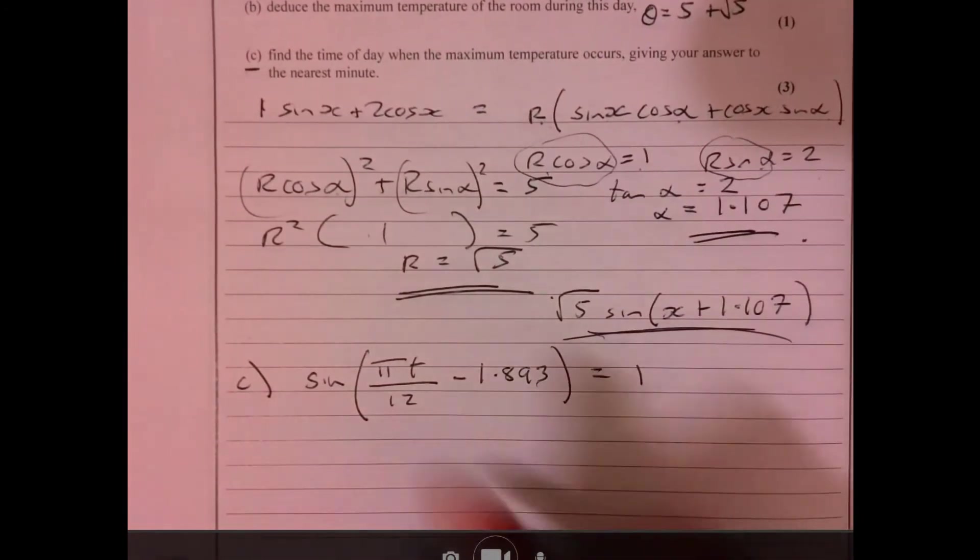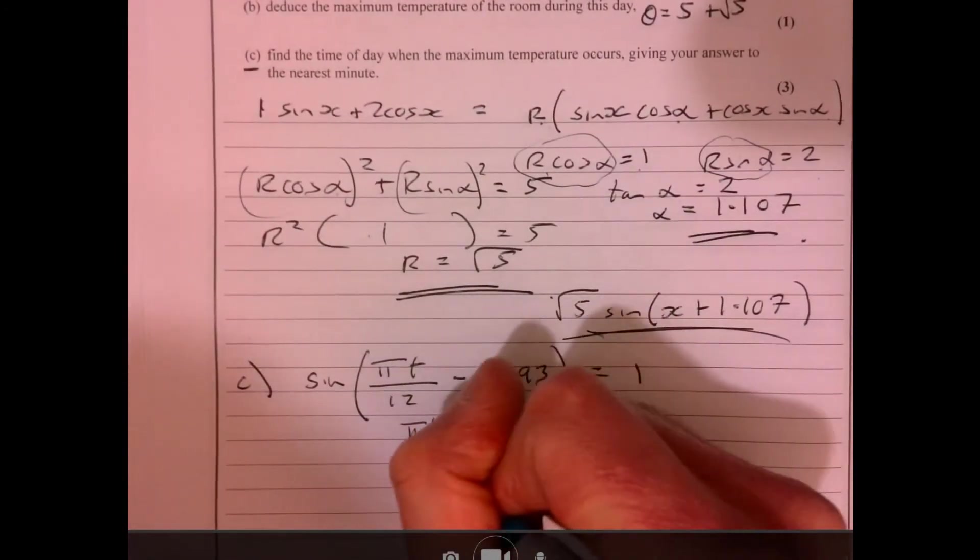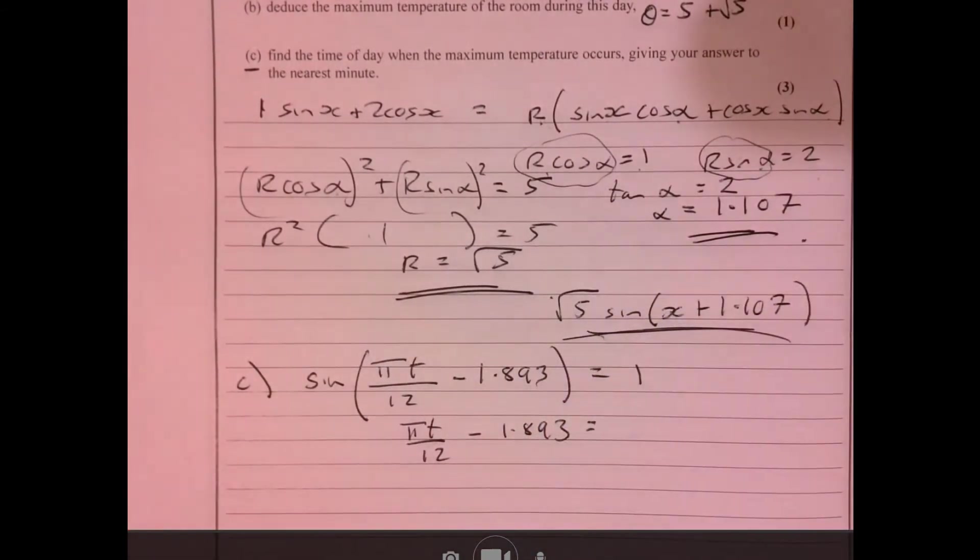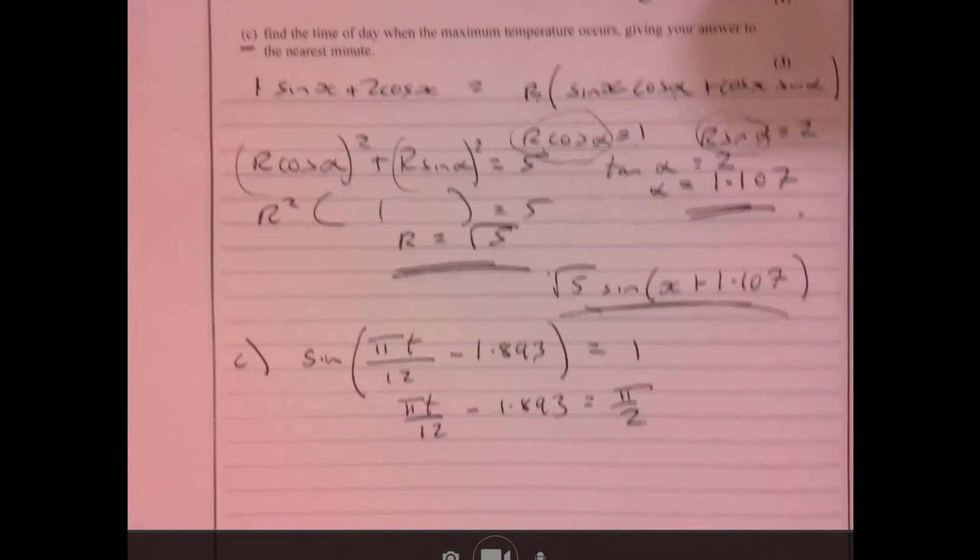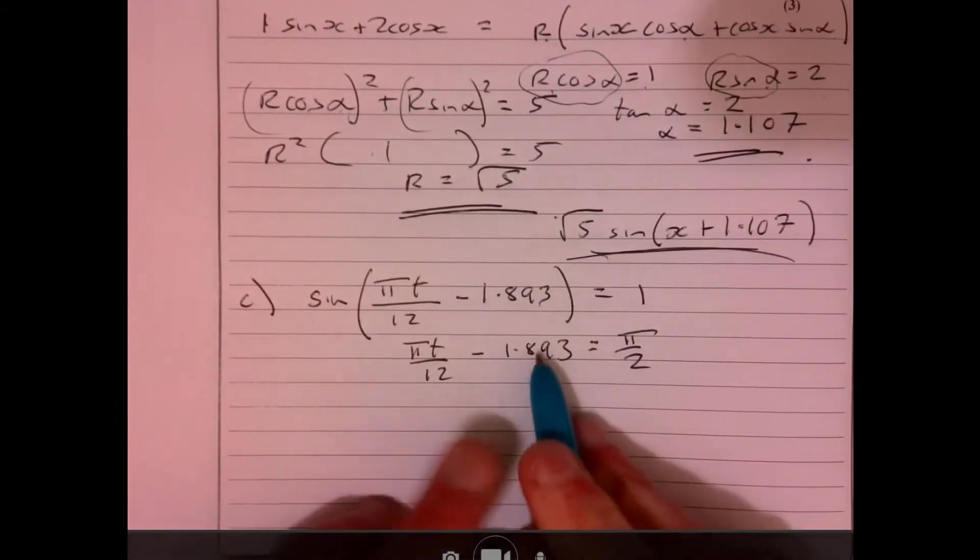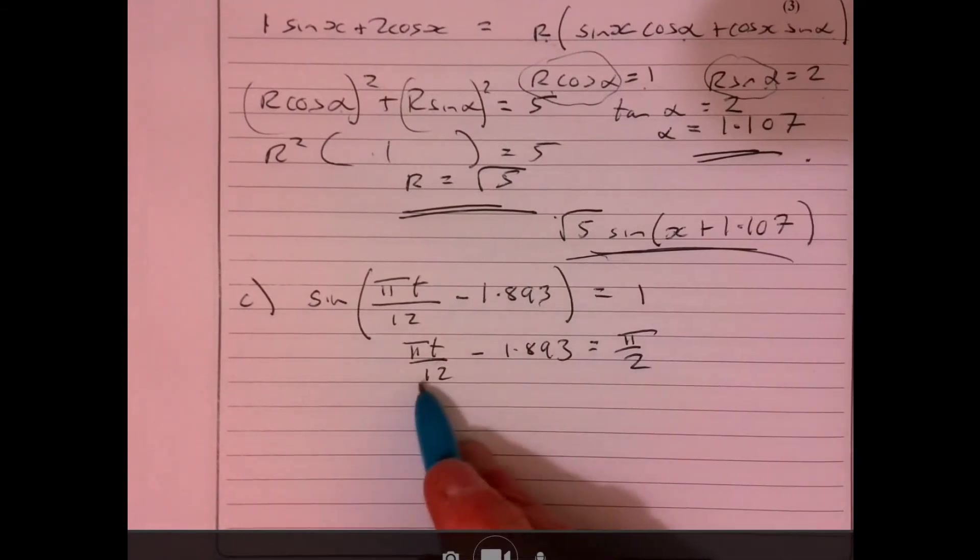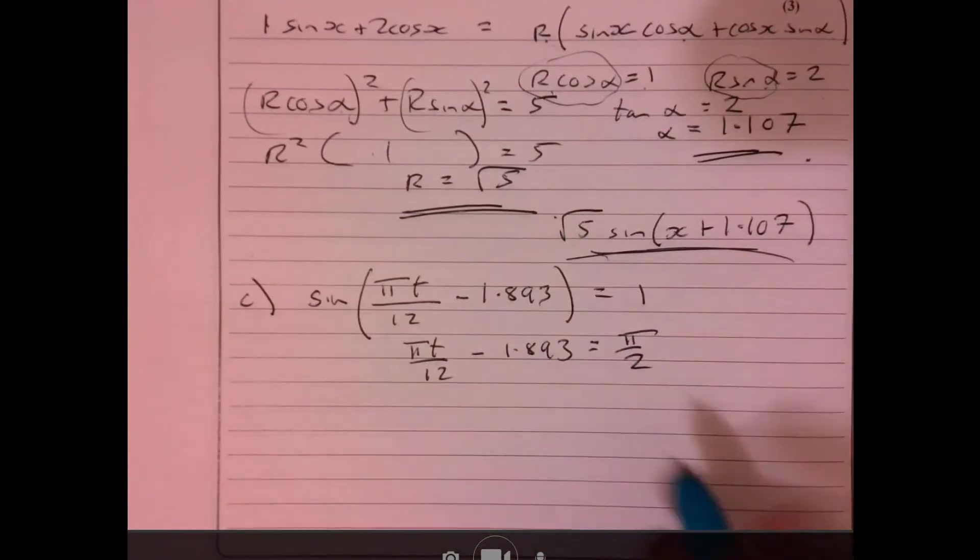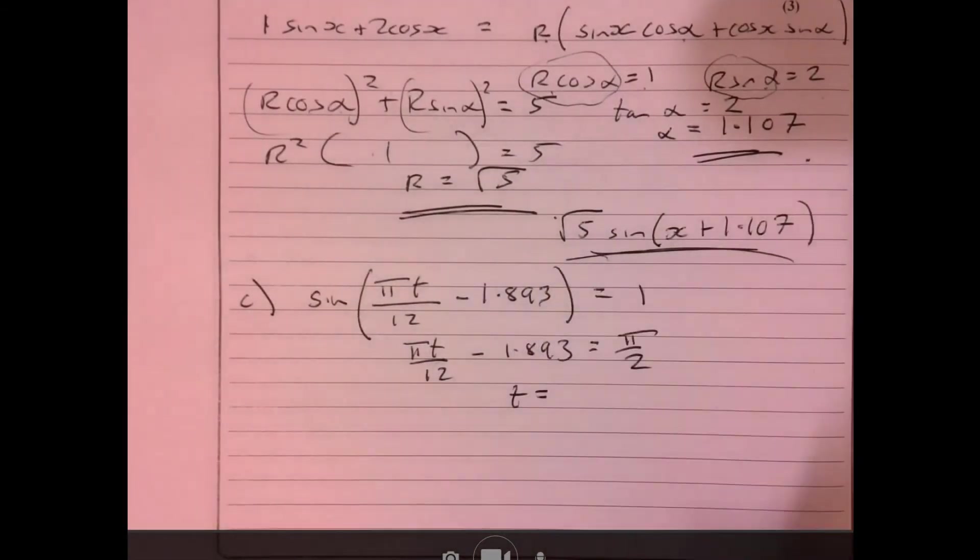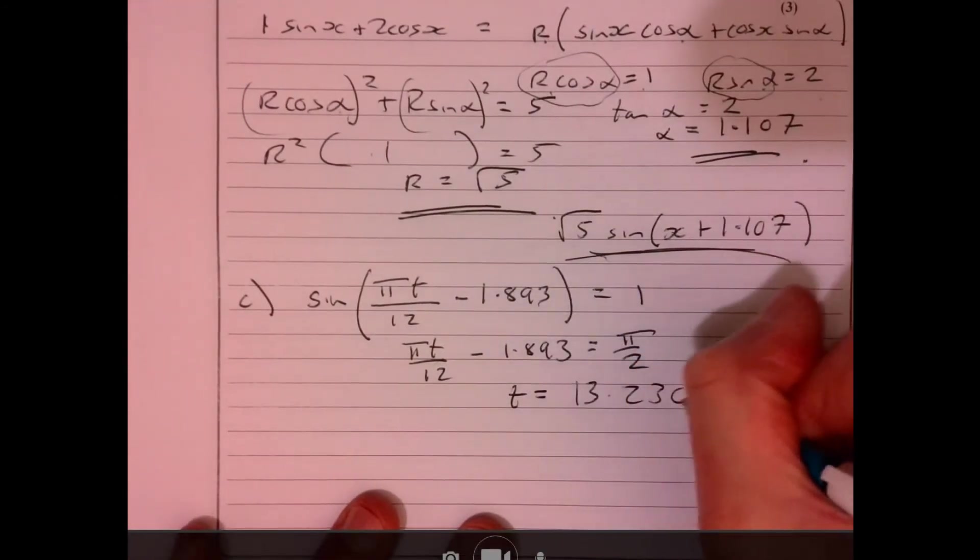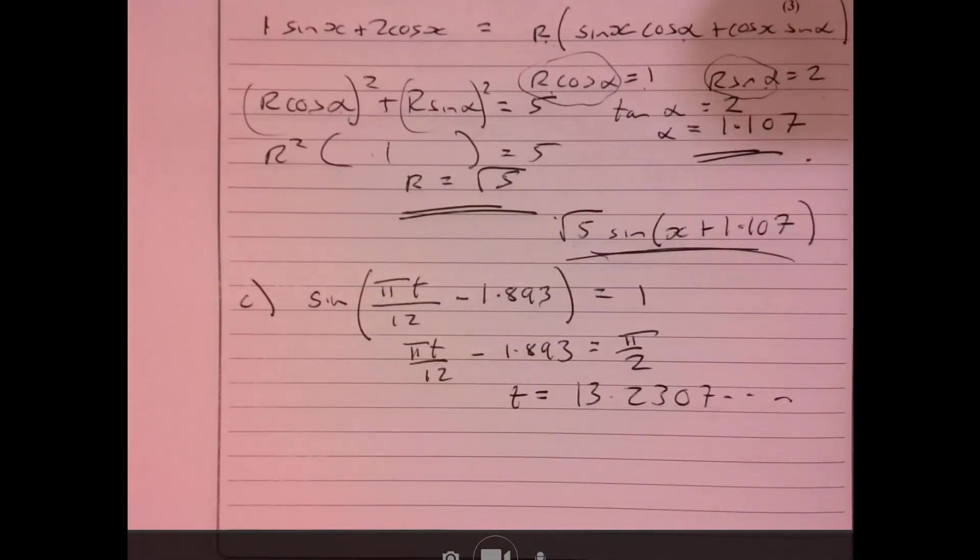Okay, inverse sine, and the rest of it should be pretty much kind of plain sailing. It's just making sense of what we've actually got just there. If you add the 1.893, multiply by 12, divide by pi, then t would equal 13.2307 and some other stuff afterwards.